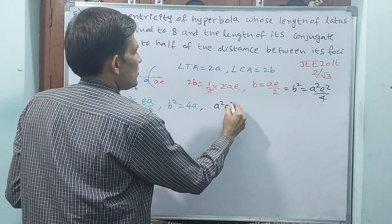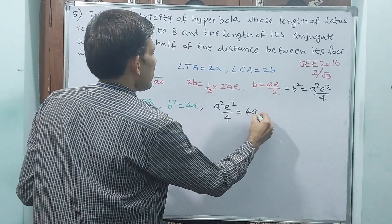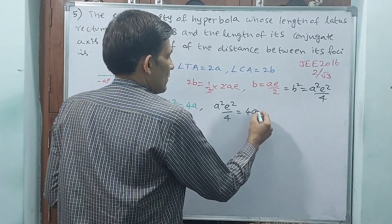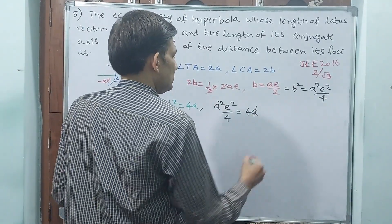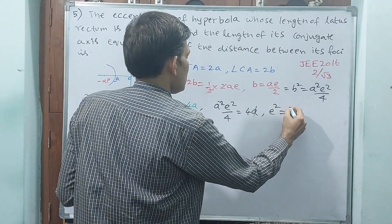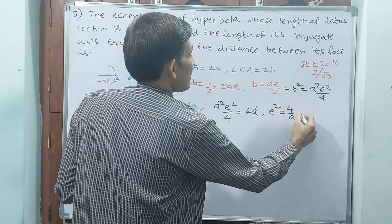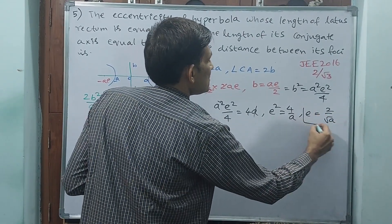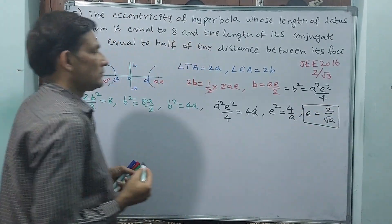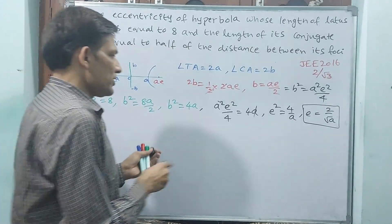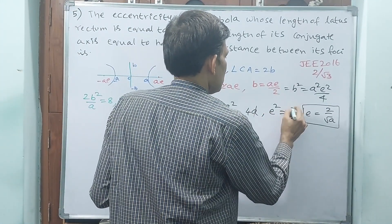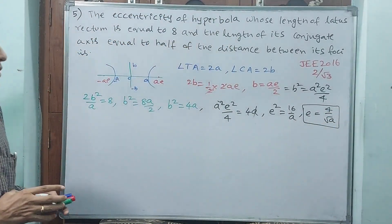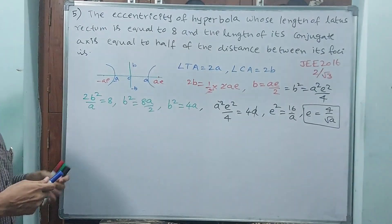Equate both. A square E square by 4 is equal to 4A. Now, one A you cancel out. If we cancel out, E square is equal to 16 by A. Then E will be equal to 4 by root A.